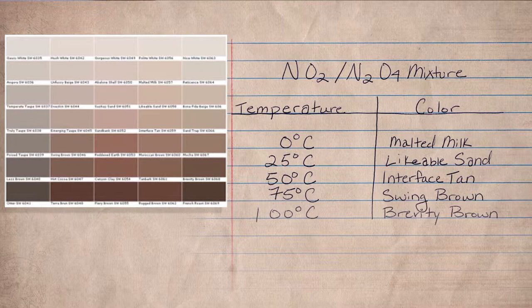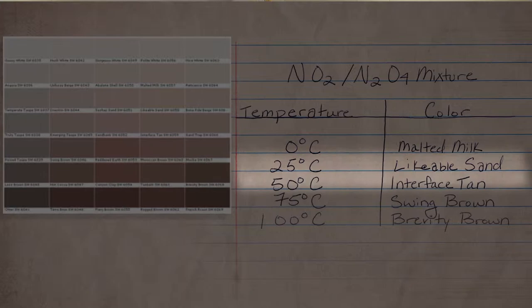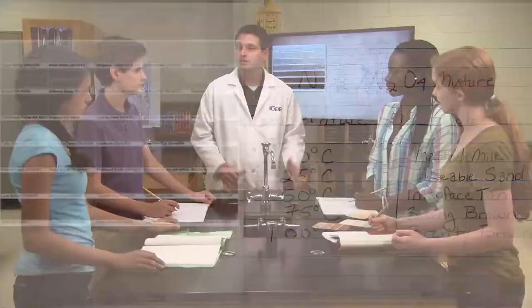0 degrees Celsius, 25 degrees Celsius, 50 degrees Celsius, 75 degrees Celsius, and 100 degrees Celsius. Just like them, we also found that the gas mixture was a darker brown at higher temperatures.